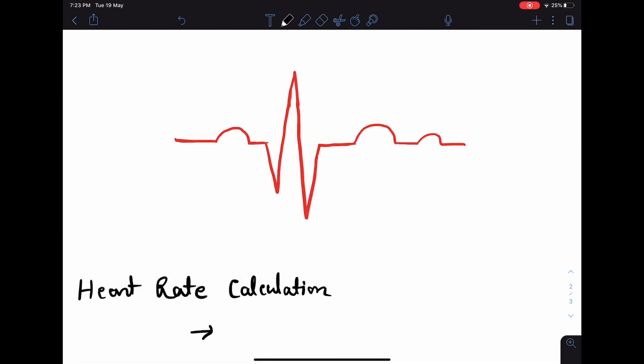Now in ECG we will see following waves and complexes: P wave, QRS complex, T wave, and U wave. P wave represents atrial depolarization. QRS complex represents ventricular depolarization. ST segment, T wave, and U wave represent ventricular repolarization. There is also a wave for atrial repolarization, but it is usually obscured by the QRS complex, so normally we do not get to see it.